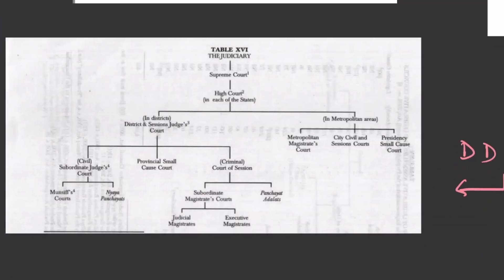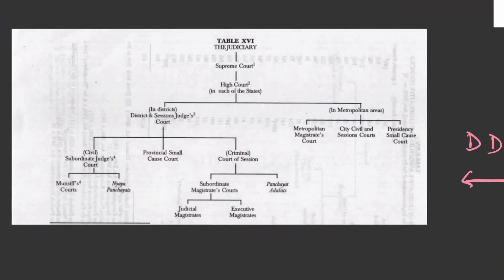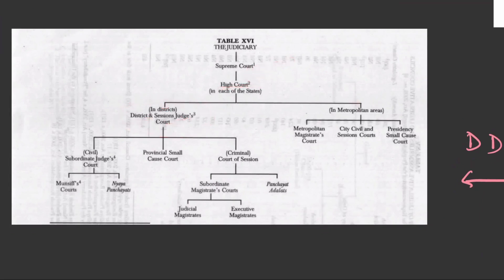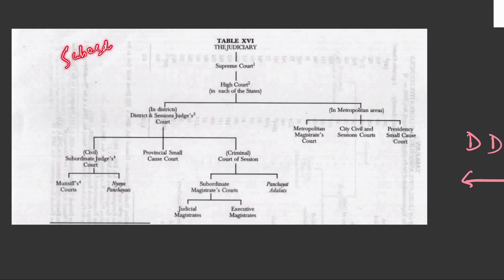If we look at the same thing in D.D. Basu, you will see below the High Court the District and Sessions Judge Court. So basically, what we focus on is civil and criminal matters — how the functioning, terminology, and designations happen we will see when we do the chapter on Subordinate Courts. So please do not think that we are doing that chapter here — the topic for this video is just the structure and this hierarchy.